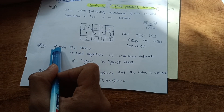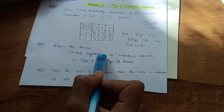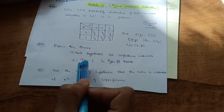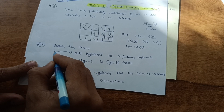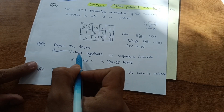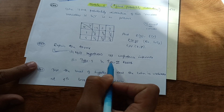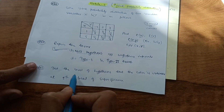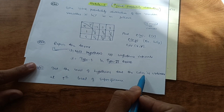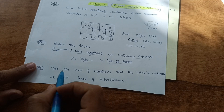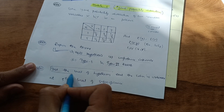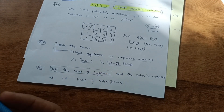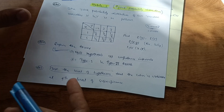Another important question in Module 5 is: explain the terms null hypothesis, confidence intervals, Type I error, and Type II error. This is a definite theoretical question — you have to memorize these concepts. Also: test the hypothesis that the coin is unbiased at a 5% level of significance. The data may vary, but the structure is the same.